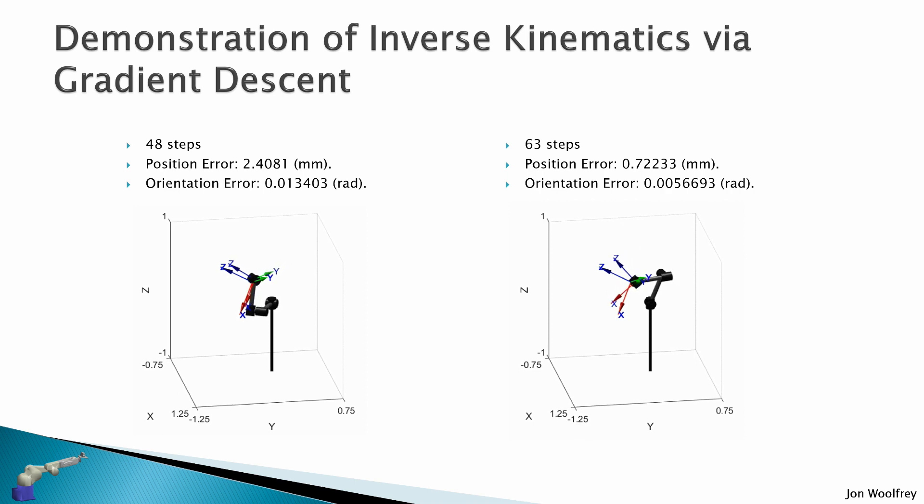Here is an animation of an inverse kinematic solver that I wrote. So I've started with two different configurations for the robot arm, and I want them to achieve the same end effector pose. You can see that it solves in a different number of steps. So I solved here for 48 steps and this one took 63 steps to solve. And also the pose error is different. So it's 2.4 millimeters for the position here and 0.72 for the position error here. And you will also notice that the elbow configuration is in a different spot, and we know from the previous video that inverse kinematics can have multiple solutions.